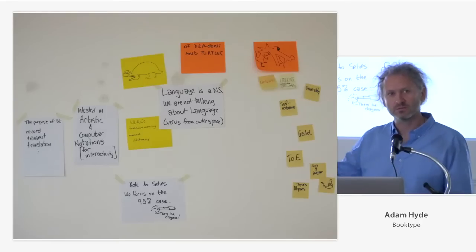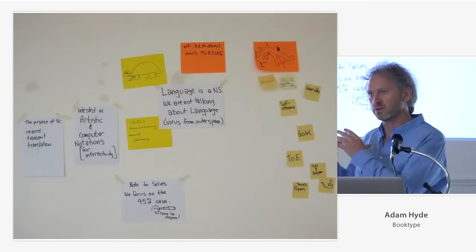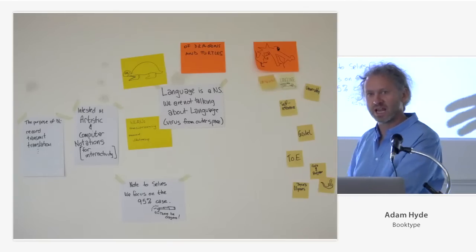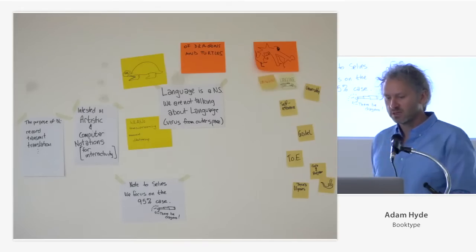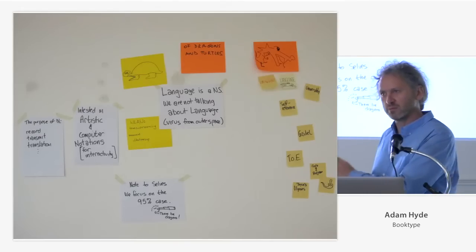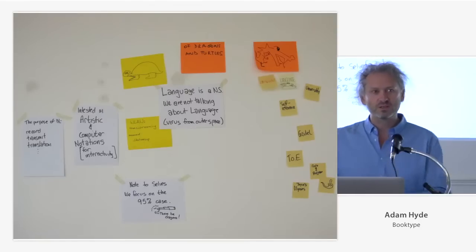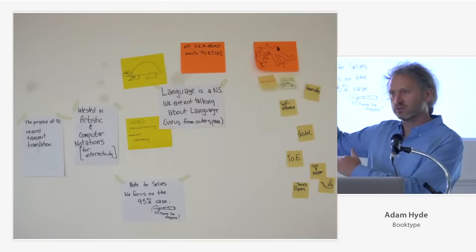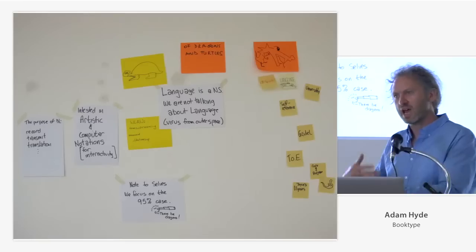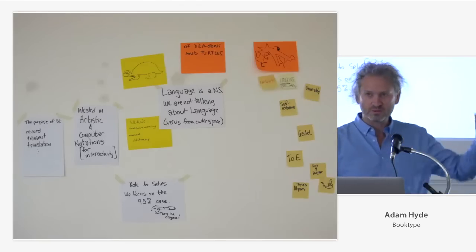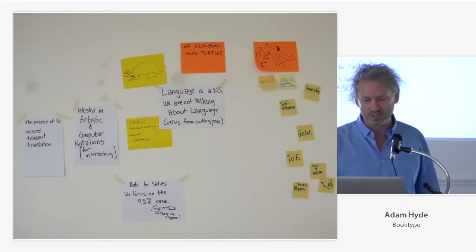Dragons being 'there be dragons' — when you start talking about notation systems you can very easily fall into talking about language itself, which is a dragon. We know it's there and we don't want to talk about it because it just blows all of our ideas out of the water. And turtles — the Terry Pratchett idea of the universe sitting on a turtle, and what's under that is another turtle. This unpeeling of meanings — notation systems built on notation systems — which I guess is what annotation is about.